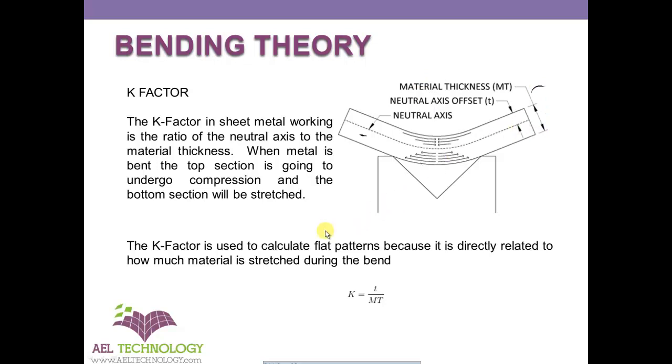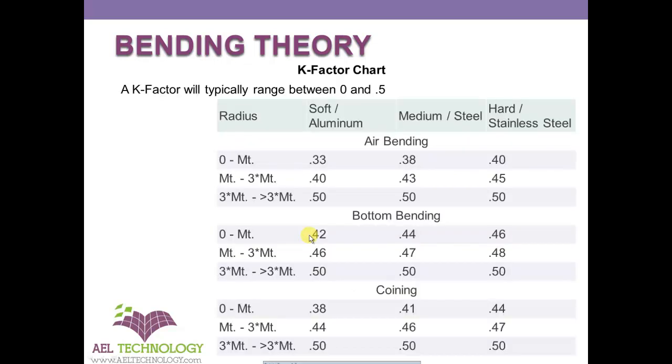Generally it varies between 0 and 0.5, it will always be less than 0.5. Here there is a chart called a K factor chart. It's based upon the radius of the bend.